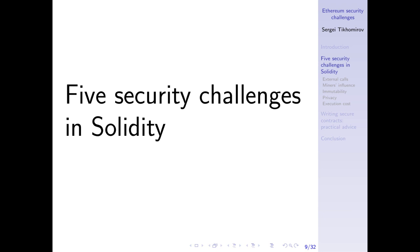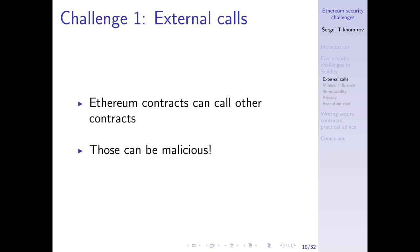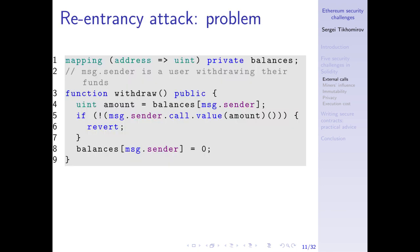Now I'm going to discuss five challenges — five things you should definitely keep in mind if you want to develop secure smart contracts in Solidity. The first challenge is external calls. Ethereum contracts can communicate with other contracts, which is very useful because contracts can leverage each other's functionality. But external contracts can be malicious. When you as a developer want to communicate with some external entity, you should not assume that external entity will behave in a way suitable for you — you should expect there might be an attacker at that external address.